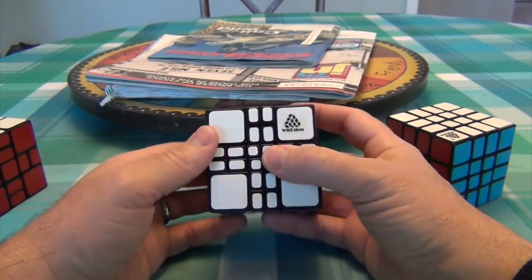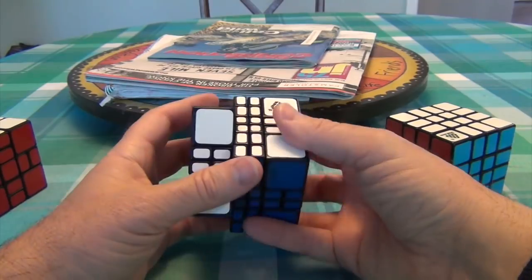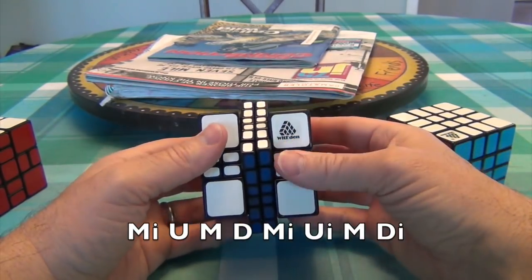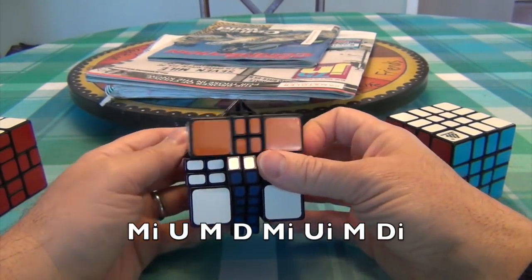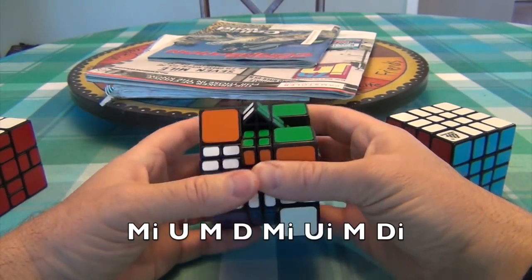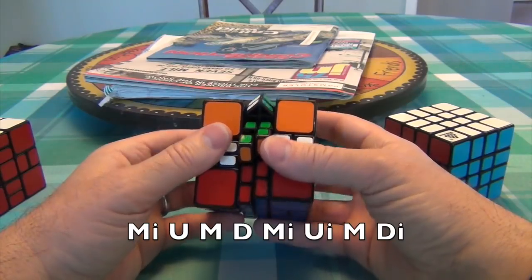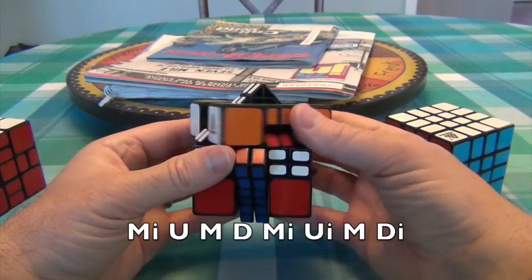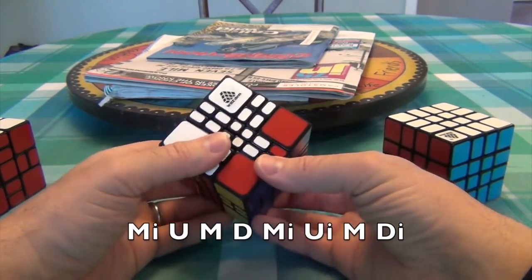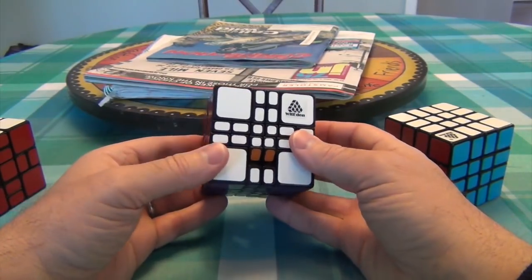So here's an example of what that is, basically you do an M move, actually that's an M prime move, you do a U, and then an M, then you do a D, then you reverse it with an M prime, U prime, M, and then D prime.